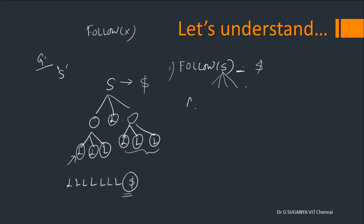Now consider a production A gives α B β. For computing FIRST we look at the non-terminal on the left, but for FOLLOW we have to identify the symbols that can follow a given non-terminal on the right-hand side. So what is FOLLOW of B? It is β. When β is a terminal you can directly add it; when β is a non-terminal, we need to look further.